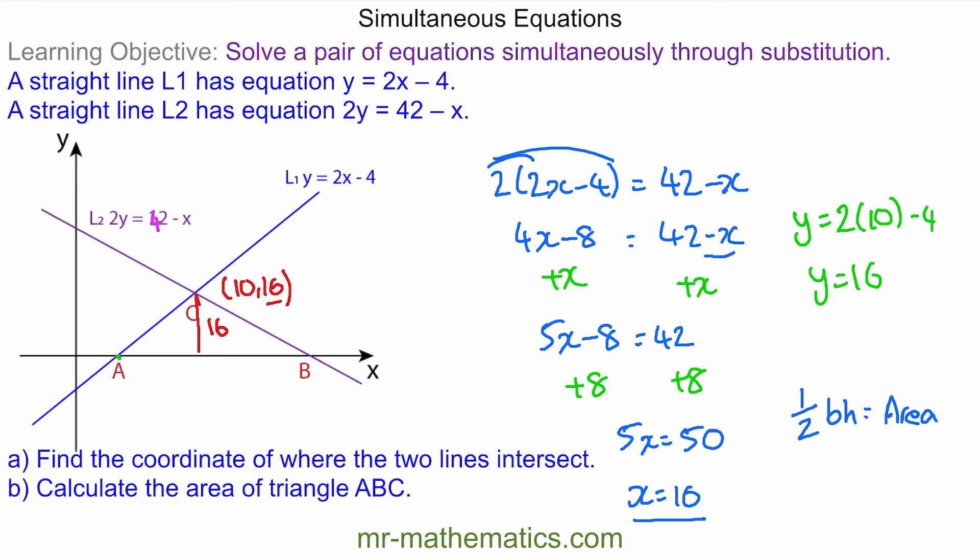At A, y is 0, so we can put 0 equals 2 lots of x minus 4. So x must equal 2. So this x coordinate here is 2.